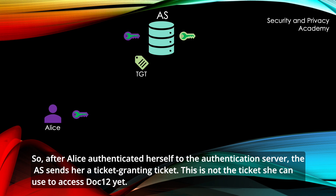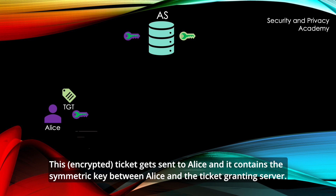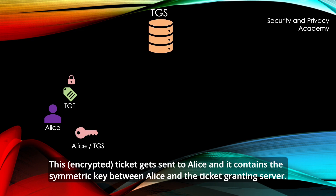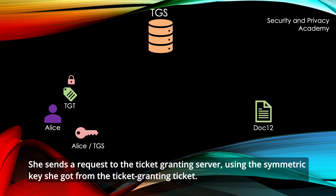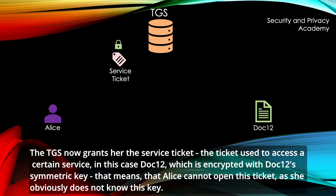So after Alice has authenticated herself to the authentication server, the AS sends her a ticket-granting ticket. This is not the ticket she can use to access DOC12 yet. This encrypted ticket gets sent to Alice, and it contains the symmetric key between Alice and the ticket-granting server. Alice now has everything she needs in order to request a ticket to access DOC12. She sends a request to the ticket-granting server using the symmetric key she got from the ticket-granting ticket. The TGS now grants her the service ticket — the ticket used to access a certain service, in this case DOC12 — which is encrypted with DOC12's symmetric key.